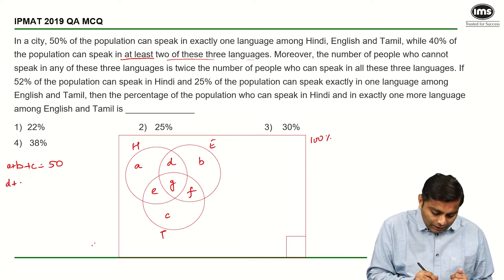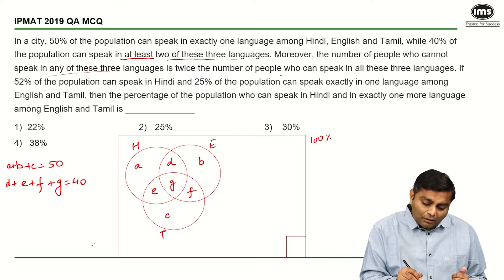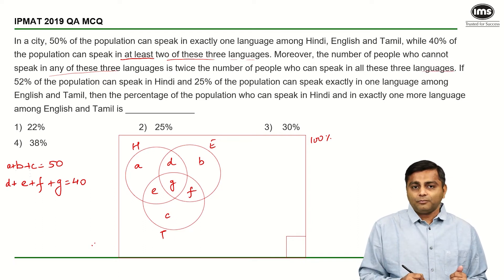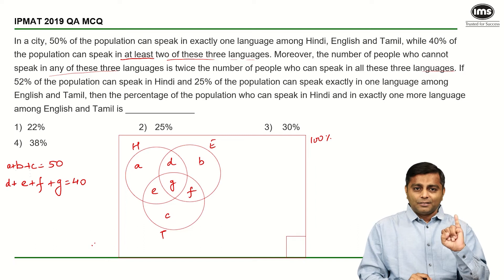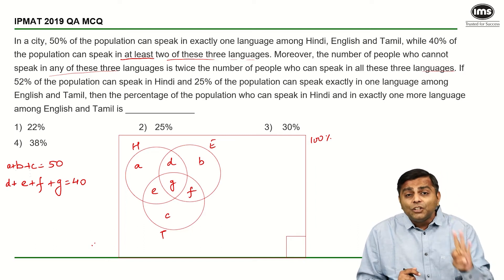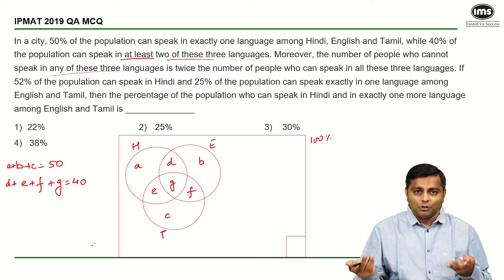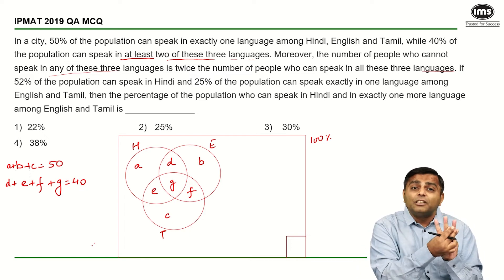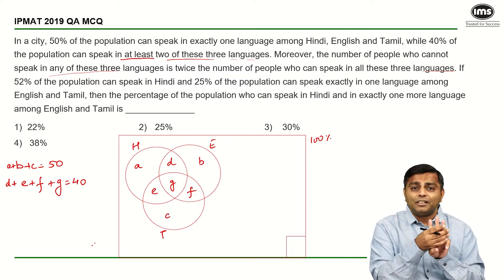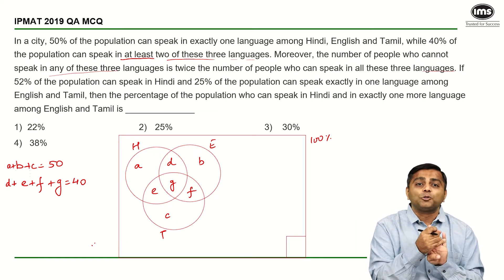The number of people who cannot speak in any of the three languages — the bottom right corner — is twice the number of people who can speak all three languages, meaning the bottom right corner is twice G. People who can speak one language, two languages, three languages, and zero languages all add up to 100%. They said 50% can speak one language and at least two is 40%, so 50 plus 40 is 90%, meaning people who can speak zero languages is 10%.